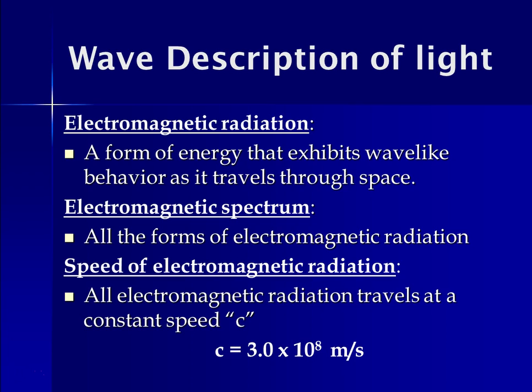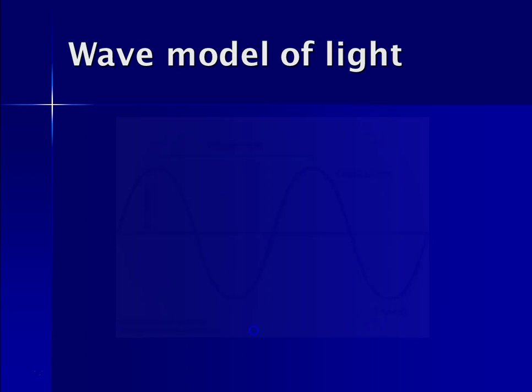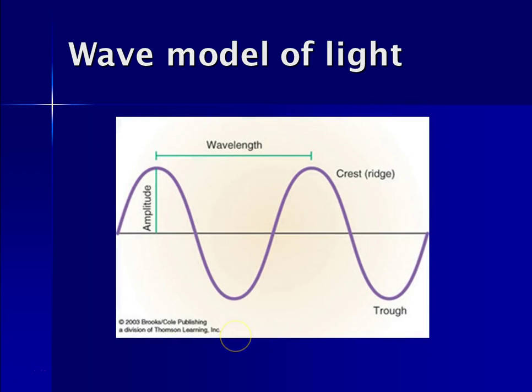It travels at a constant speed. And that speed, which is referred to as the speed of light, has a very large number. It's 3 times 10 to the 8th meters per second. And notice, the unit is meters per second, meters being how far it goes per second. So what we're saying here is that light travels at a rate of 3 times 10 to the 8th meters in a given second.